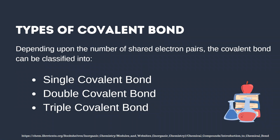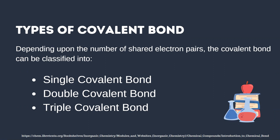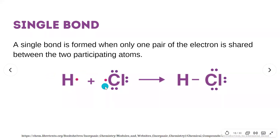We also have types of covalent bond based on the number of shared electron pairs, and these are classified into single bond, double bond, and triple covalent bond. For the single bond, it is formed when only one pair of electrons is shared between two participating atoms. It is represented by a single dash. Although this form of covalent bond has a smaller density and is weaker than the double and triple bond, it is the most stable. For example, in the HCl molecule, hydrogen has one valence electron and chlorine has seven valence electrons, and a single bond is formed between them by sharing one electron.